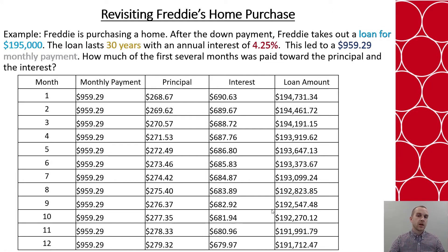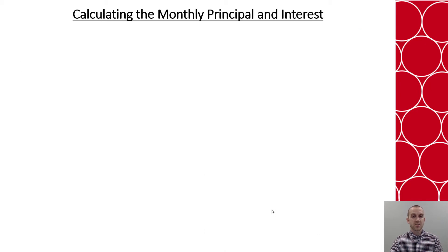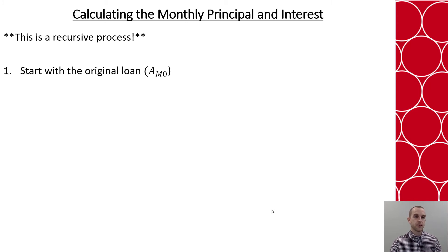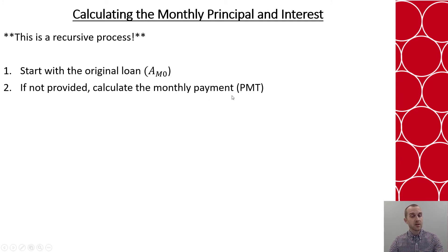So when we're calculating the principal and interest of an amortized loan, it's important to recognize again that this is a recursive process. There's not just one formula that is going to tell you what month 212 of a 30-year loan looks like — it's a process. I have to start at month one. I need to first know the original amount of the loan — that's what M-zero means. I need to know my monthly payment, and if that hasn't been calculated, I need to calculate that. If you're unsure how to do that, check out the previous video on annuities and calculating monthly payments.